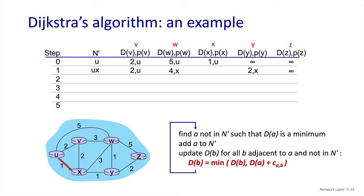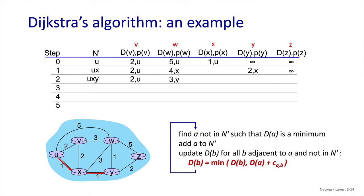We then prepare for iteration two. We see that we have two destinations with a cost of 2, so it doesn't matter which we pick — we choose y. Now u, x, and y are in n'. y gives us a path to w with a cost of 3, which is lower, so we update w's value and set its predecessor to y. y also gives us a path to z with a cost of 4 and a predecessor of y. We skip over x and y since they're already in n'.